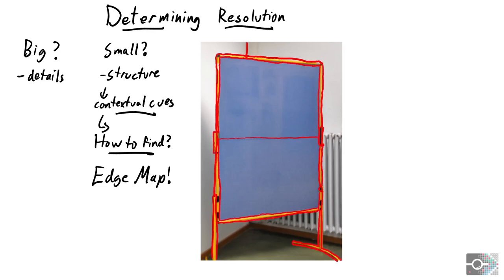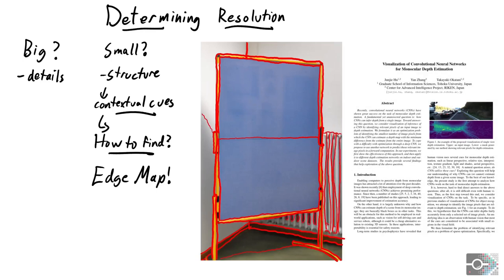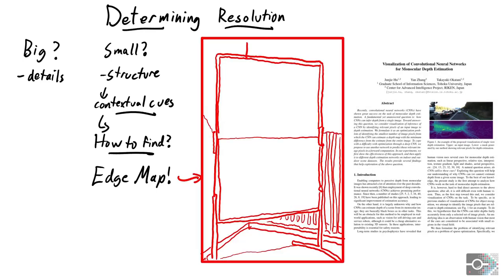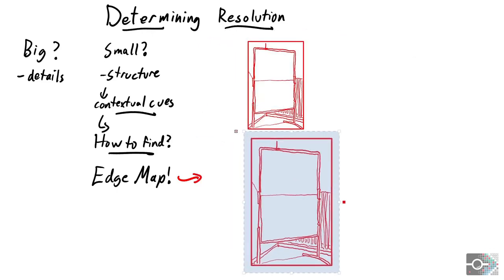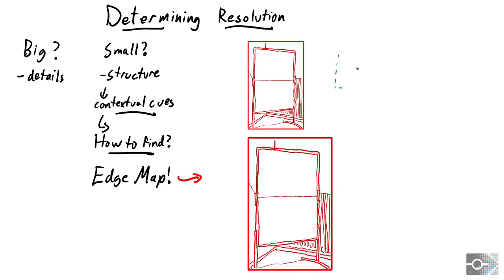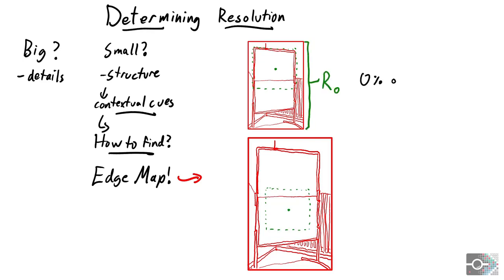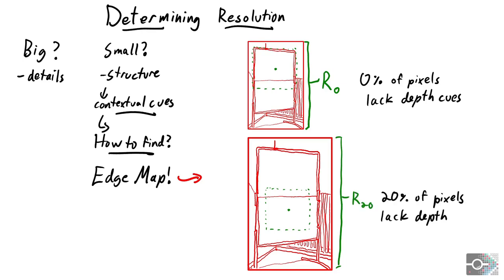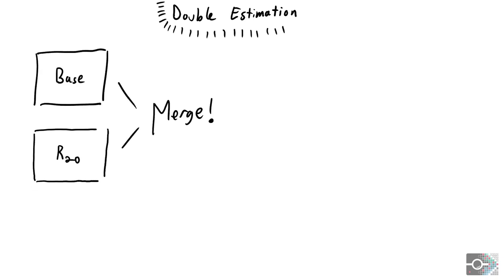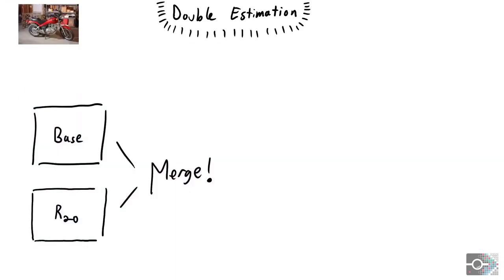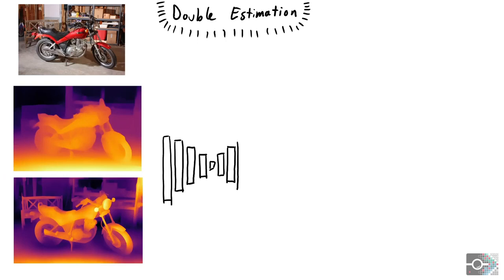This is a challenging task addressed by Hu and colleagues, who point to the correlation of contextual cues with image edges. We thus approximate contextual cues with a simple edge map. The resolution where every pixel is at most a half-receptive field size away from context edges is called R0. When we increase the resolution any further, structural inconsistencies will arise, but more details will be generated. When 20% of pixels do not receive any context, we call this resolution R20. Note that R0 and R20 depend on the image content.